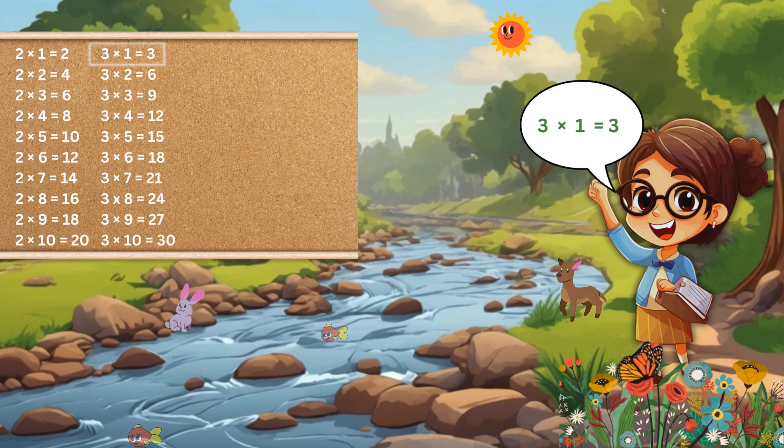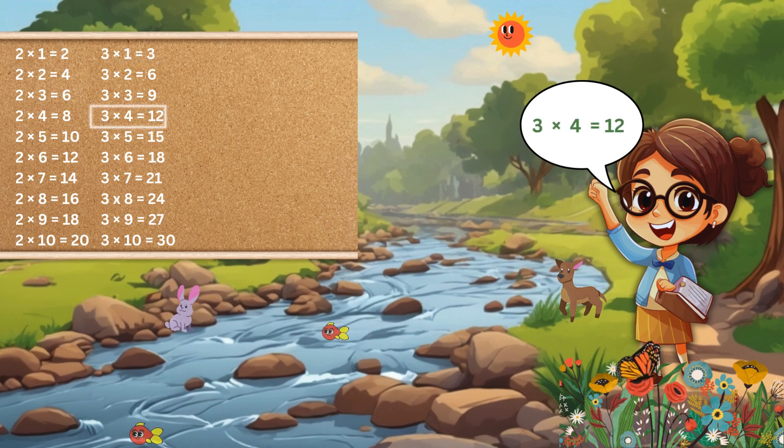3 1s are 3, 3 2s are 6, 3 3s are 9, 3 4s are 12, 3 5s are 15.